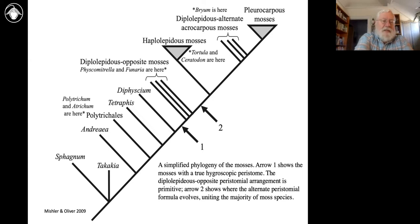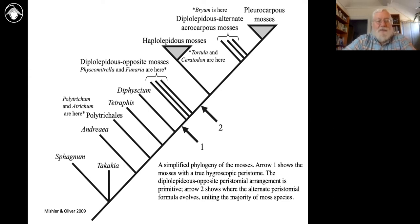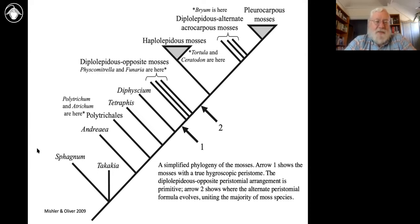I'm not really going to talk about Sphagnum too much. A long time ago we had a Jepson workshop on Sphagnum and we might do that again someday, but it's better taught somewhere up in the northeast where there could be 40 species of Sphagnum in one bog. We'll leave that aside but just mention that it's a super diverse, interesting, and ecologically important group.